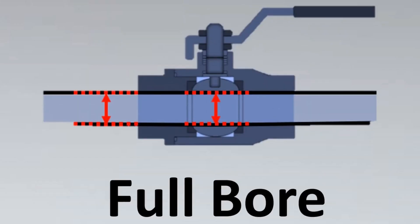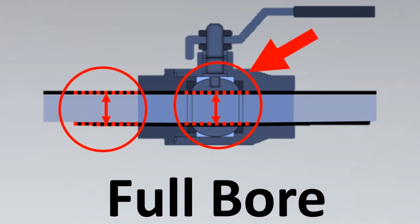A full bore valve has a bore length equal to the valve ID — that is, the diameter through which fluid passes — and this distance is the same as the line ID, which is the inner diameter of the pipe. So basically, the flow has no restriction passing through a full bore valve.